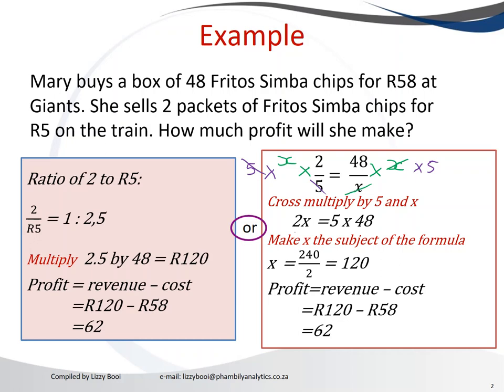Now we make x the subject of the formula by dividing both sides by 2. The 2s cancel, leaving x equals 240 divided by 2, which gives us 120. We then apply the profit formula: revenue minus cost, which is 120 minus 58 rand, giving us the same profit of 62 rand. Both methods give the same result.